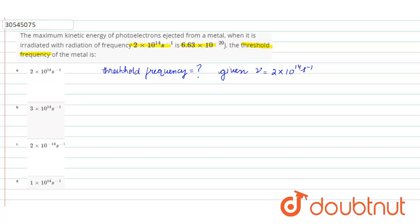And maximum kinetic energy k max is given as 6.63 into 10 raise to power minus 20 joules. So, this is the information we have given.